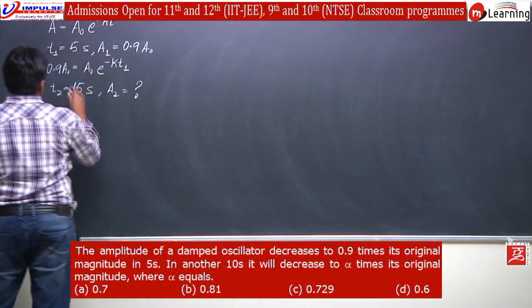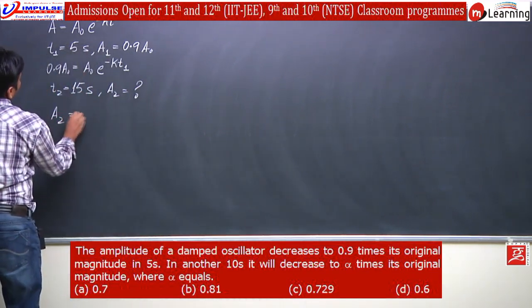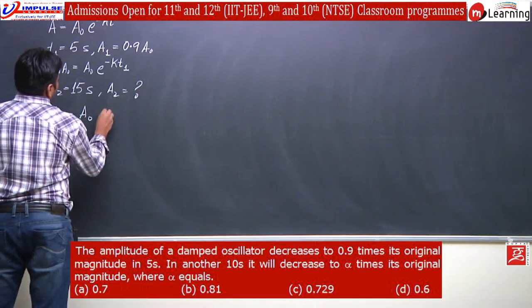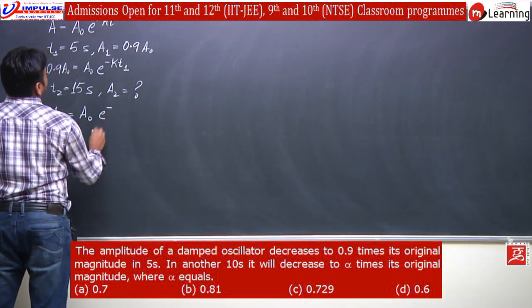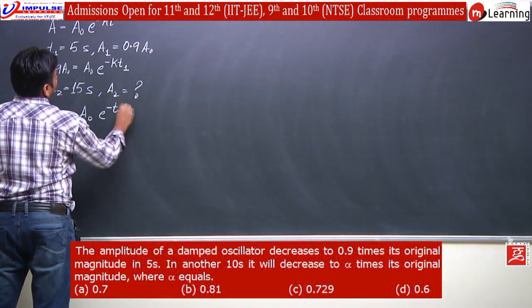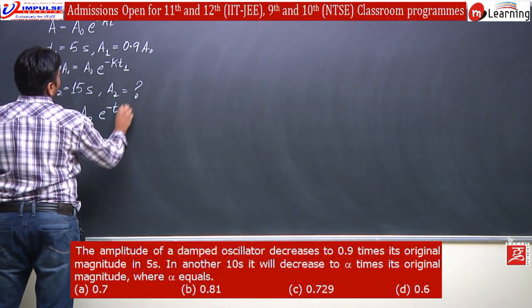Okay, again we put the values. A2 equals A0 e to the power minus t2 into constant k.